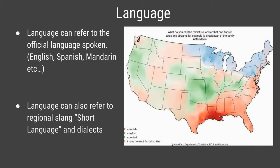Next on the seven elements of culture is language. Language can refer to the official language spoken — English, Spanish, Mandarin, Thai, Arabic, and many others — but it can also refer to slang or regional dialects. English spoken in the United States sounds very different from English in the United Kingdom, Scotland, or even within the US between Boston and Louisiana.